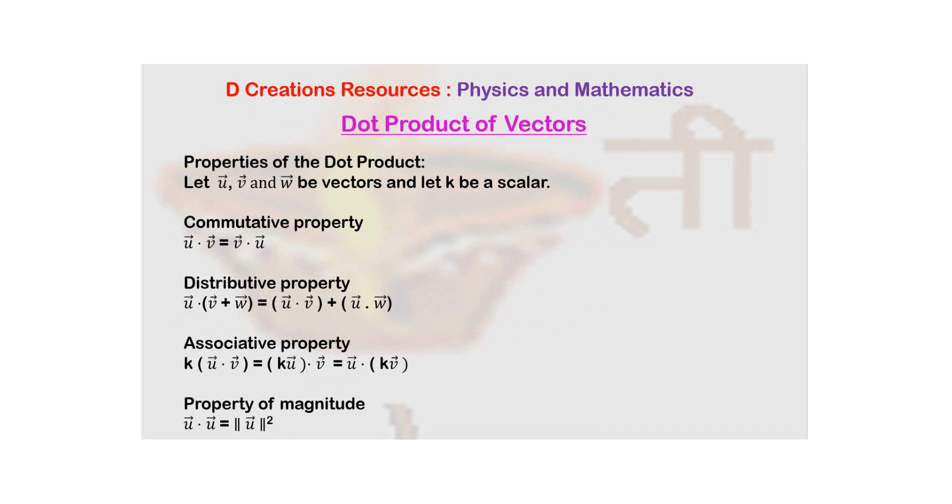Now, dot product has some properties. So let us say that there are three vectors: U bar, V bar and W bar, and there is a scalar called K. Then there is the commutative property. That means if you take dot product of U bar and V bar, it is equal to dot product of V bar and U bar. So the order does not matter here.